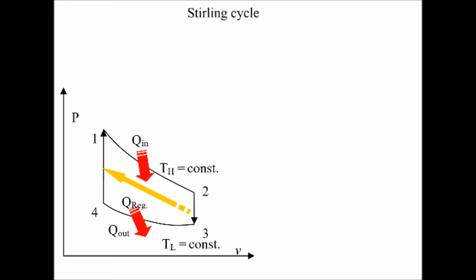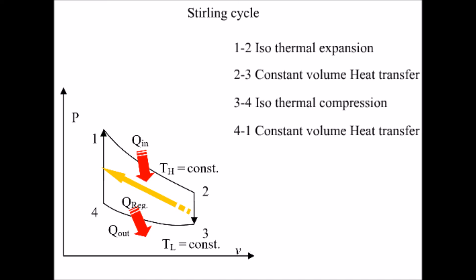Stirling cycle consists of four stages. They are: isothermal expansion, constant volume heat transfer, isothermal compression, and constant volume heat transfer.